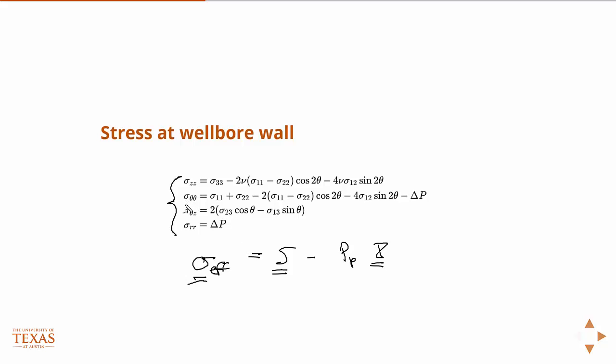Where then you have, for instance, your hoop stress. This would be your stress along the wellbore wall, tangential to the wellbore wall. So your hoop stress, for example, would be sigma-theta-theta.